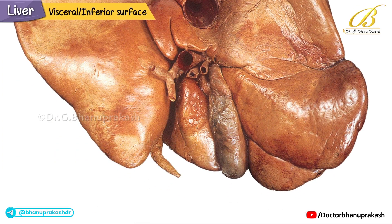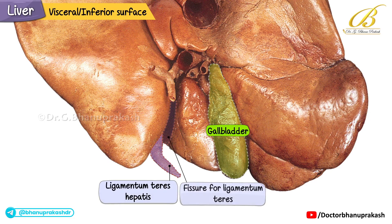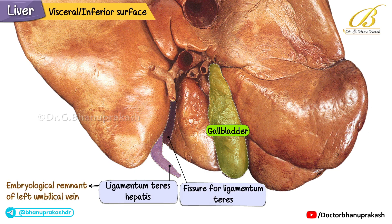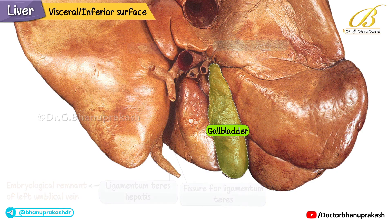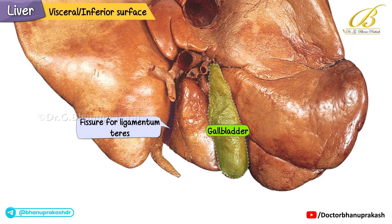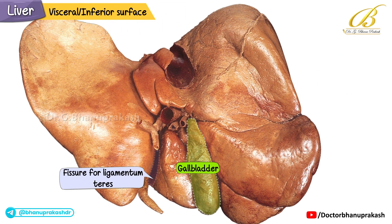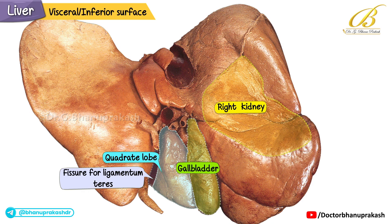This image shows the visceral, or inferior, surface of the liver. The gallbladder lies in its fossa, while the ligamentum teres hepatis occupies the fissure for the ligamentum teres, an embryological remnant of the left umbilical vein. At the porta hepatis you can see the portal vein, the proper hepatic artery, and the right and left hepatic ducts entering and leaving the liver. Between the gallbladder fossa and the fissure for the ligamentum teres lies the quadrate lobe. On the visceral surface of the right lobe there is an impression made by the right kidney, and above this impression is the bare area of the liver.